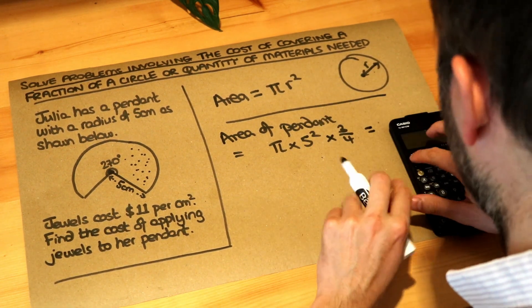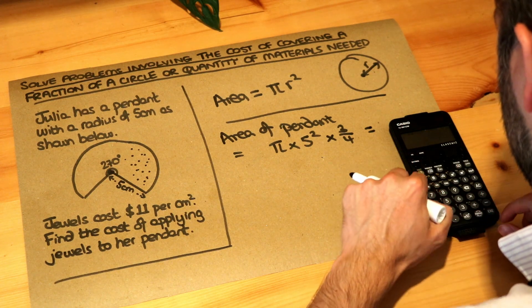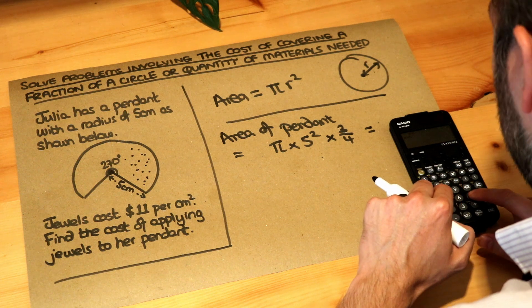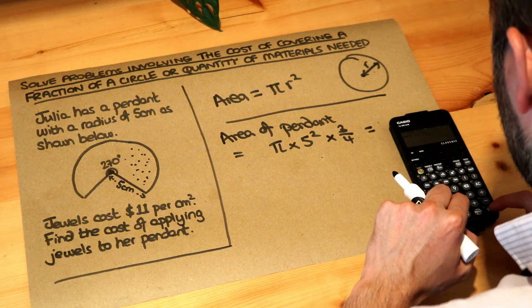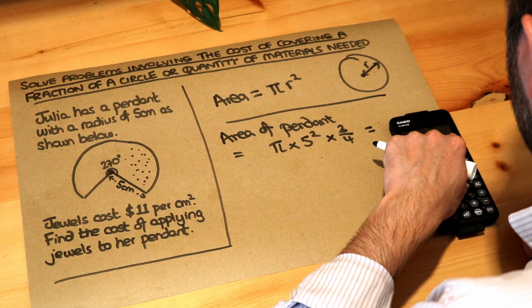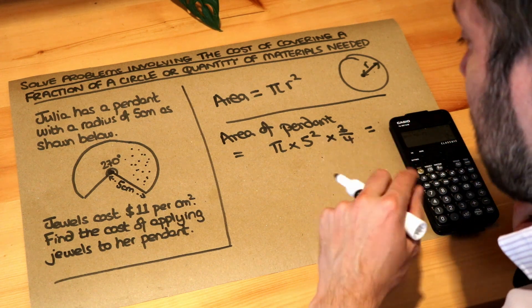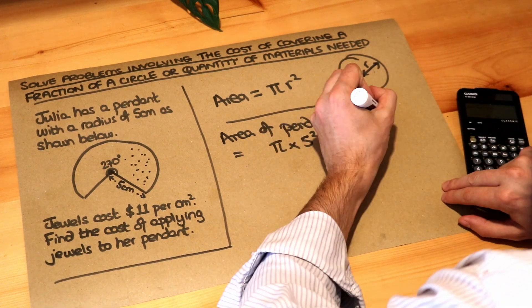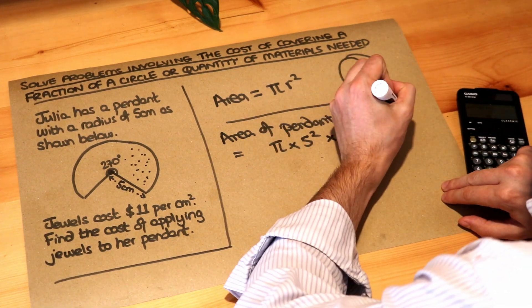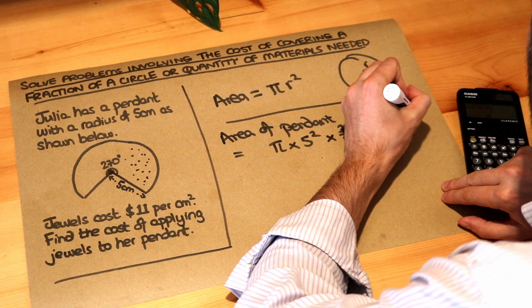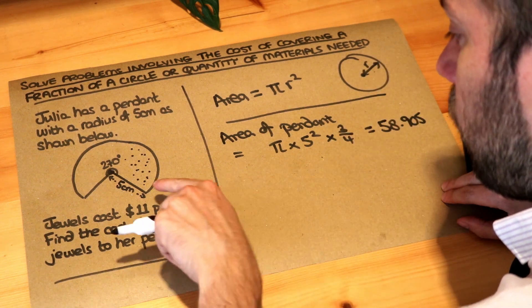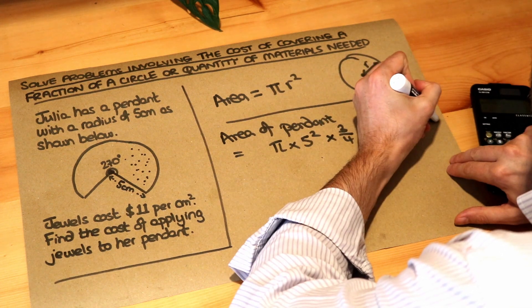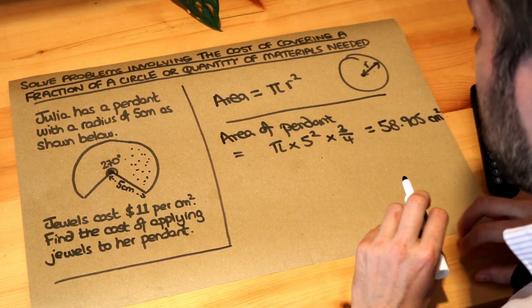So if I put this in my calculator, I do π, shift π, multiplied by five squared, multiplied by three quarters. And it's given me 75 over 4π, but let's just say I want that as a decimal. I can convert that to a decimal and that gives me 58.905. And what's the unit? Well the length here is centimeter so the unit of area will be centimeters squared. So that is the area of the pendant.